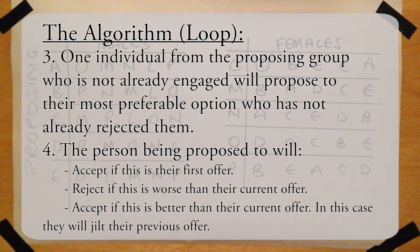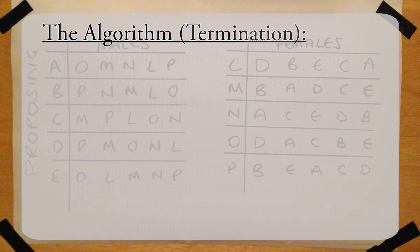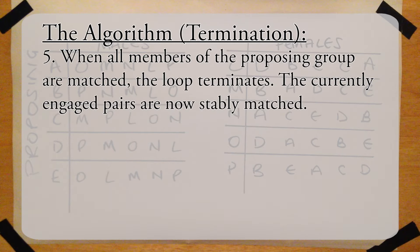Note that it does not matter in what order the males make their proposals, as the stable matching will be the same. This section will loop until all people in the proposing group, and thus all people in the other group, are engaged. At this point, the pairs have been finalized and the people in the pairs are married.